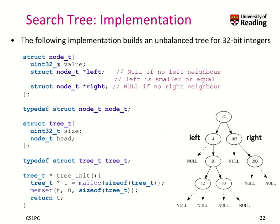We have a node structure and a tree structure. In the tree structure, we have a head node, and we want to store how many nodes there are as a size, which is another data element. When we initialize the tree, we allocate our tree data structure and initialize it with zero. We have a null as a head node — basically set to null everywhere — and we have size initialized to zero as well.